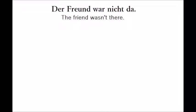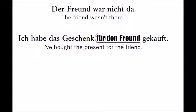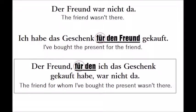'Der Freund war nicht da.' — 'The friend wasn't there.' 'Ich habe das Geschenk für den Freund gekauft.' — 'I bought the present for the friend.' Now watch out: in this example there is a preposition in front of the noun. That is important — prepositions need to stay with the article, which means they come before the relative pronoun. 'Der Freund, für den ich das Geschenk gekauft habe, war nicht da.' — 'The friend, for whom I bought the present, wasn't there.'